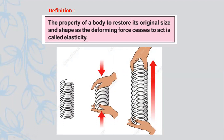We have a spring. We stretch and compress it. If we remove the forces, this spring will return to its original shape. We say that this is due to its elasticity. The property of returning to original shape after the removal of the deforming force is called elasticity.